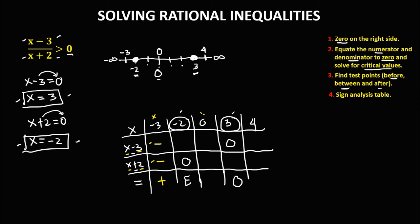For x equals 0: numerator is 0 minus 3, that's negative 3 (negative sign). Denominator is 0 plus 2, that's positive 2 (positive sign). Negative divided by positive gives a negative result. For x equals positive 4: numerator is 4 minus 3, that's positive 1 (positive). Denominator is 4 plus 2, that's positive 6 (positive). Positive divided by positive gives a positive result.